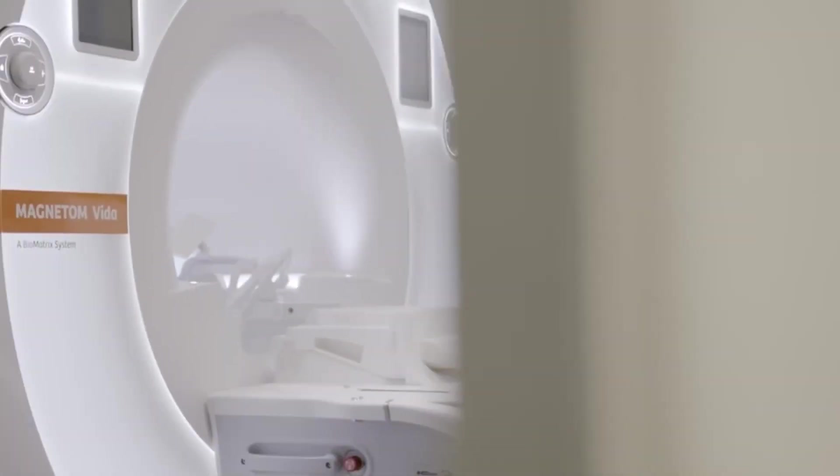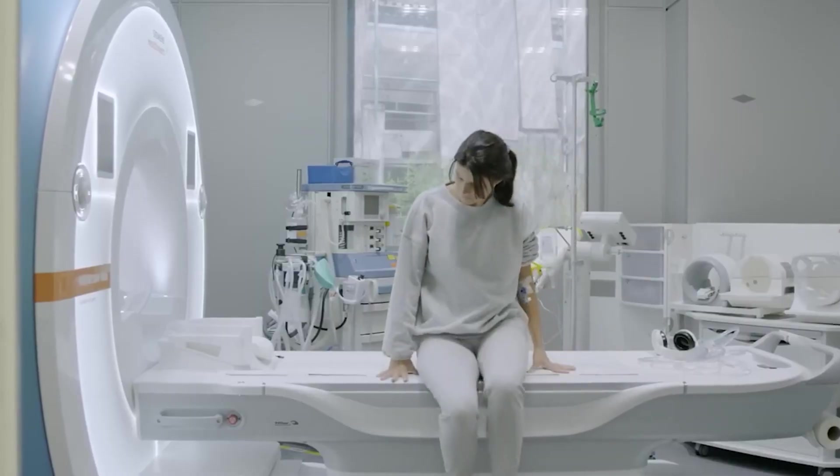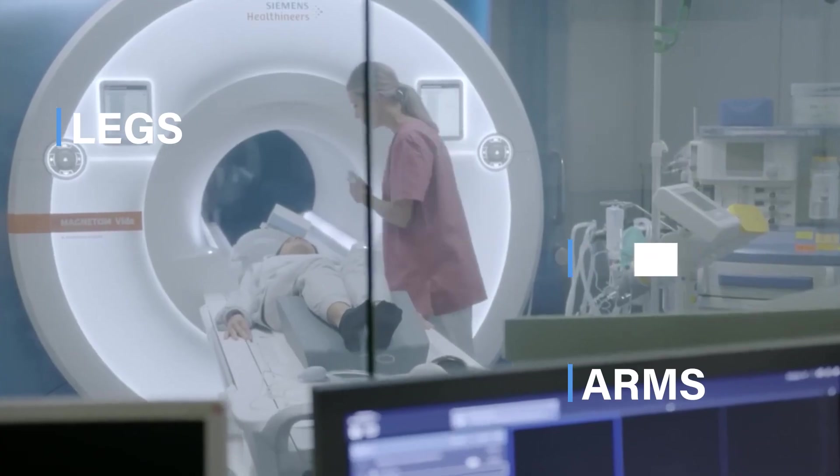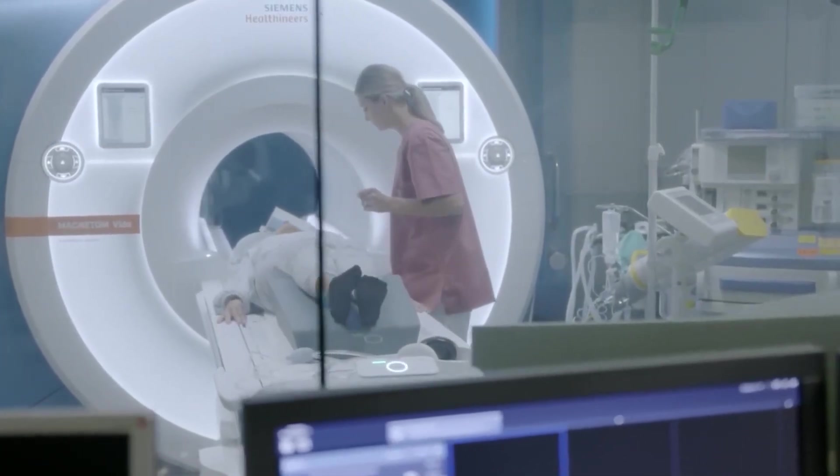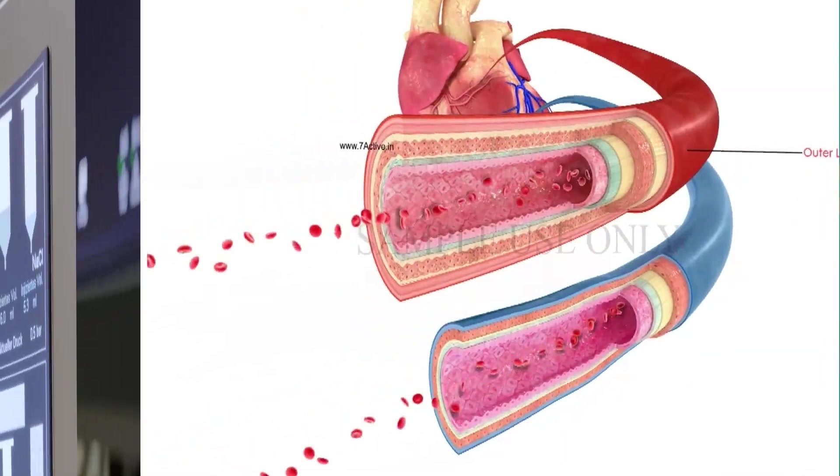MRA machines are also known as MR scanners or MRI machines. MRA exams are typically used to visualize the blood vessels in the head, neck, chest, abdomen, pelvis, arms, and legs. They can be used to detect abnormalities in the blood vessels such as blockages or aneurysms, and to evaluate the blood flow to organs and tissues.